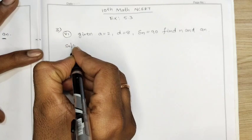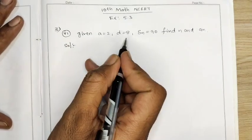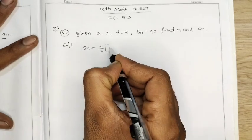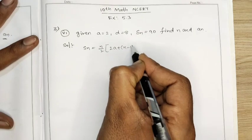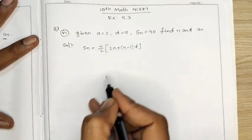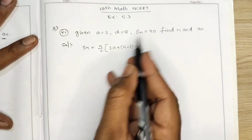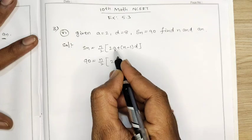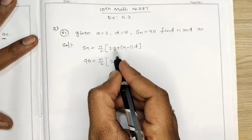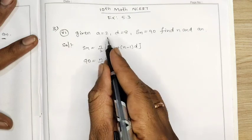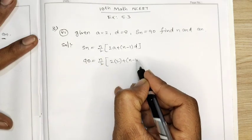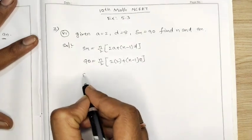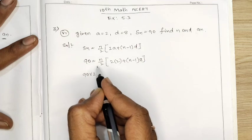Solution: Sn is given, so I will take the Sn formula. Sn equal n by 2 into 2a plus n minus 1 into d. We will substitute the given values. Sn is 90, so 90 equal n by 2 into bracket 2 — we will write 2 because a equal to 2 — plus n minus 1 into d, value given that is 8.